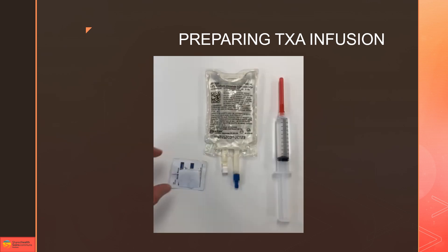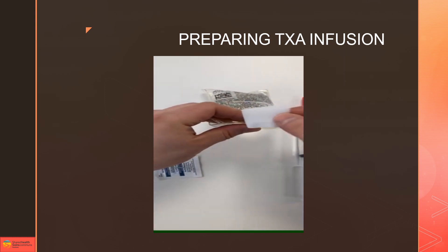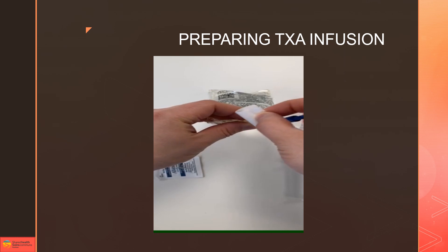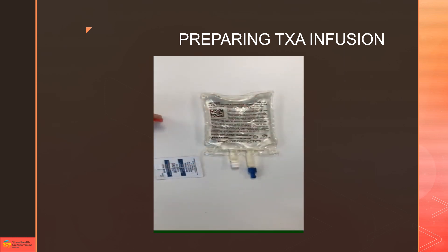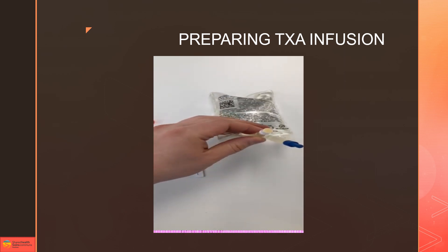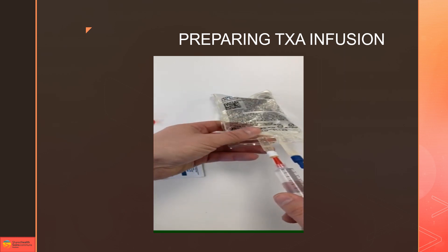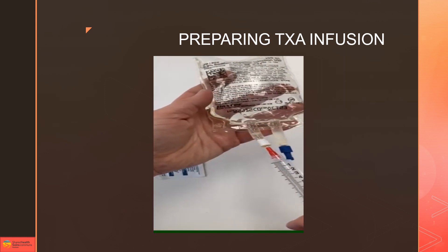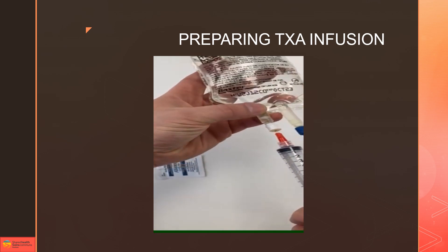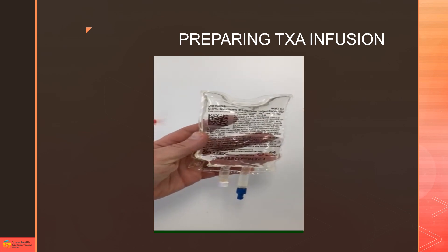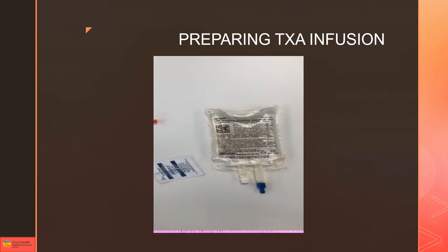To prepare your TXA infusion, first we're going to take our alcohol swab and clean the injection port of the 100 cc bag properly to make sure we don't introduce any infection or debris. Then we're going to inject our medication into the port of the IV bag. It's very important when you put the needle in that you go straight to make sure we don't nick the side or pierce the actual side of the port. Then we're going to push our 10 cc's into the bag, and once that's done we're going to mix it up by shaking it back and forth, and then we are good to go.